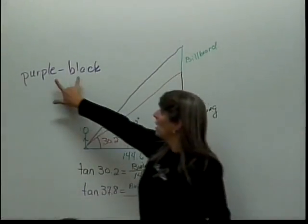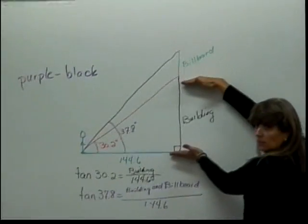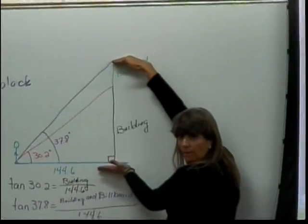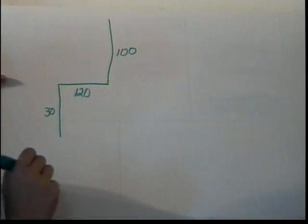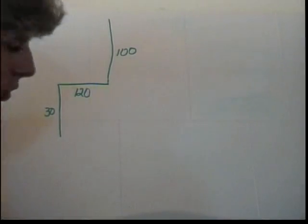This is what we're finding by doing purple minus black. All we can find is how tall the billboard is and how tall they are together. This is not drawn to scale. And the question is, how far are we from where we stand?